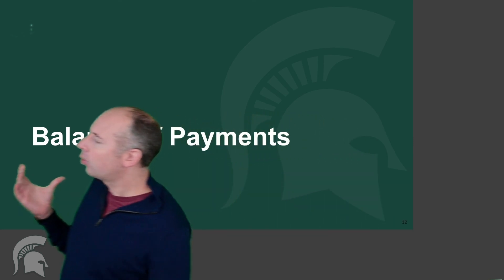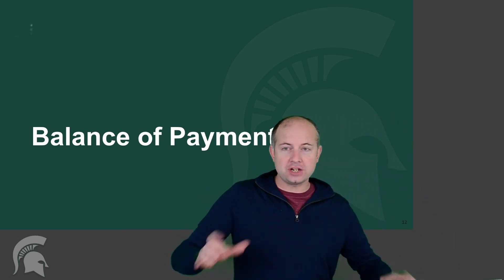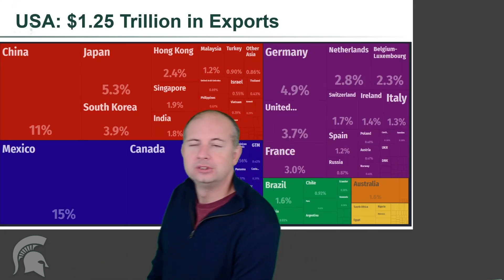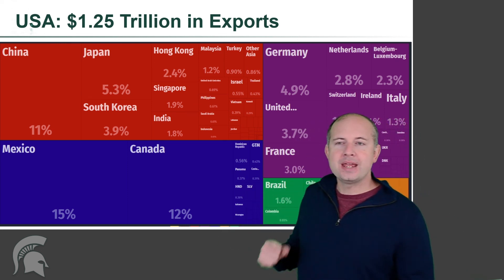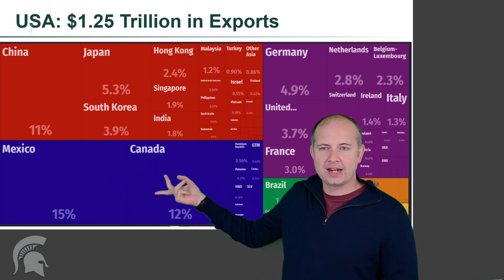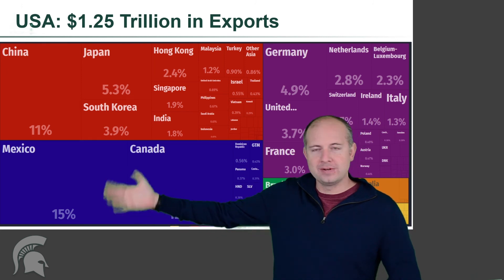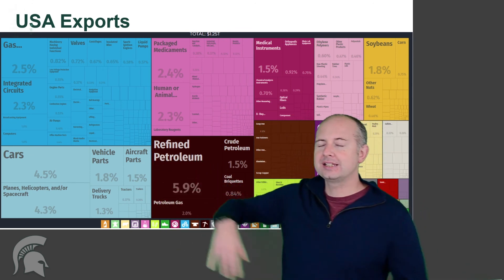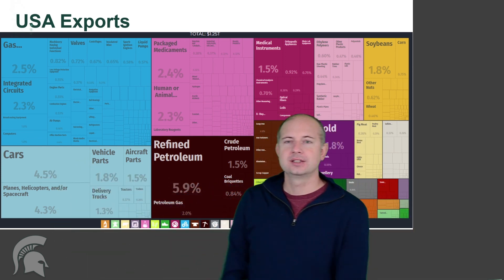Balance of payments — we're going to think about imports and exports. Think about a balance sheet for the United States, with money flowing out (like when you buy a Toyota made in Japan) and money flowing in (like when we sell a Boeing airplane). Main export partners for the United States are Mexico and Canada, followed by China — about 27% of exports go to those two neighbors. Main US exports include refined petroleum, cars, and airplanes.